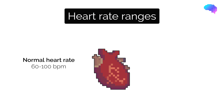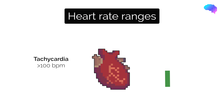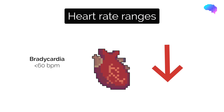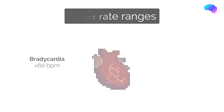As a reminder, a normal heart rate is between 60 to 100 beats per minute. Tachycardia, or a fast heart rate, refers to a heart rate that is greater than 100 beats per minute. Bradycardia, or a slow heart rate, refers to a heart rate that is less than 60 beats per minute.